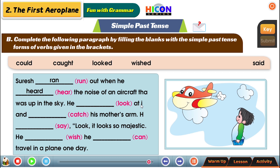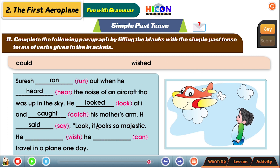He looked at it and the next blank is 'catch'. The past tense of 'catch' is not 'catched' - it is 'caught', C-A-U-G-H-T. So he caught his mother's arm. The past tense of 'say' is 'said'. He said, 'Look, it looks so majestic.' Majestic means great. He wished - the past tense of 'wish' is 'wished'.